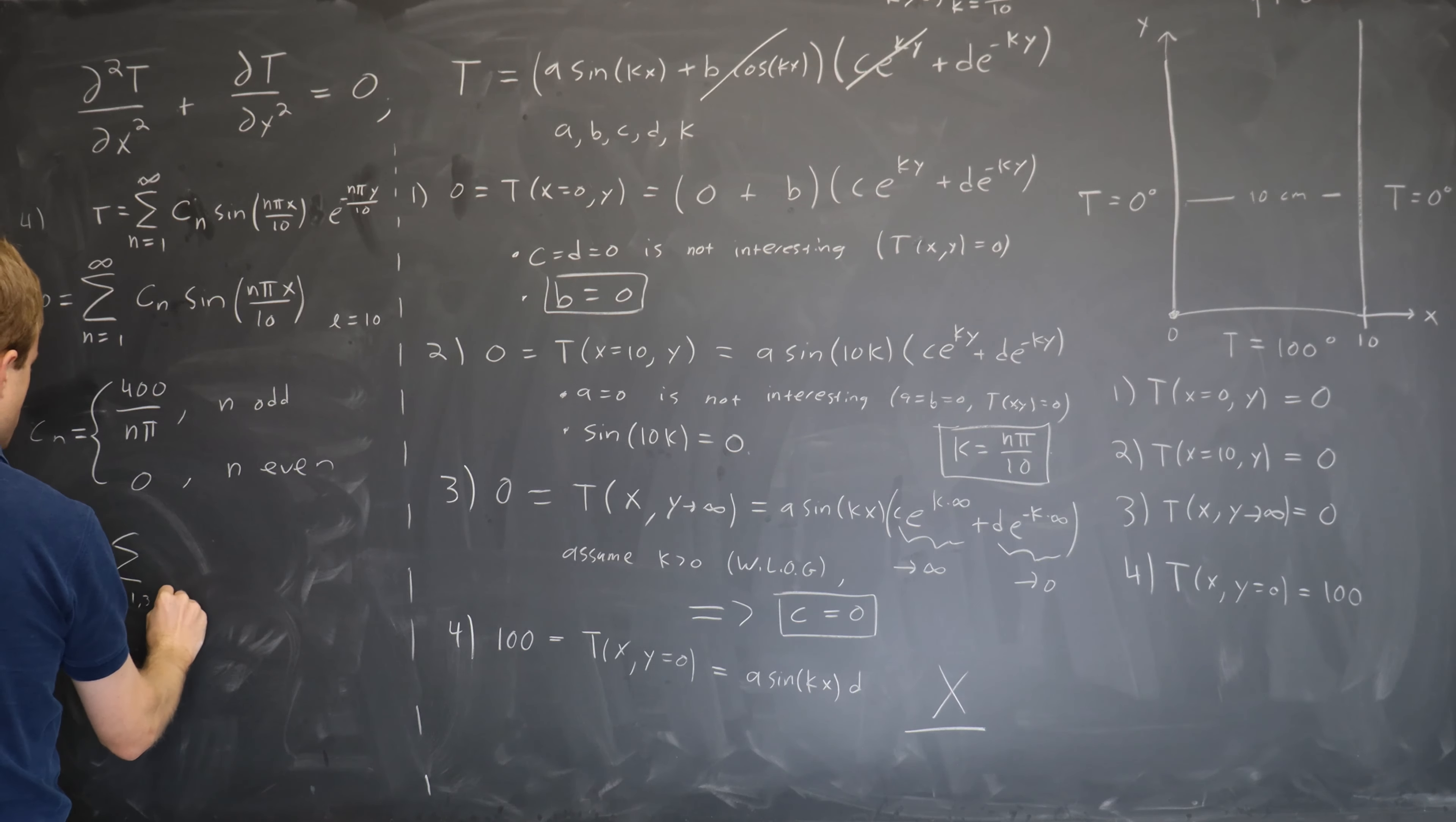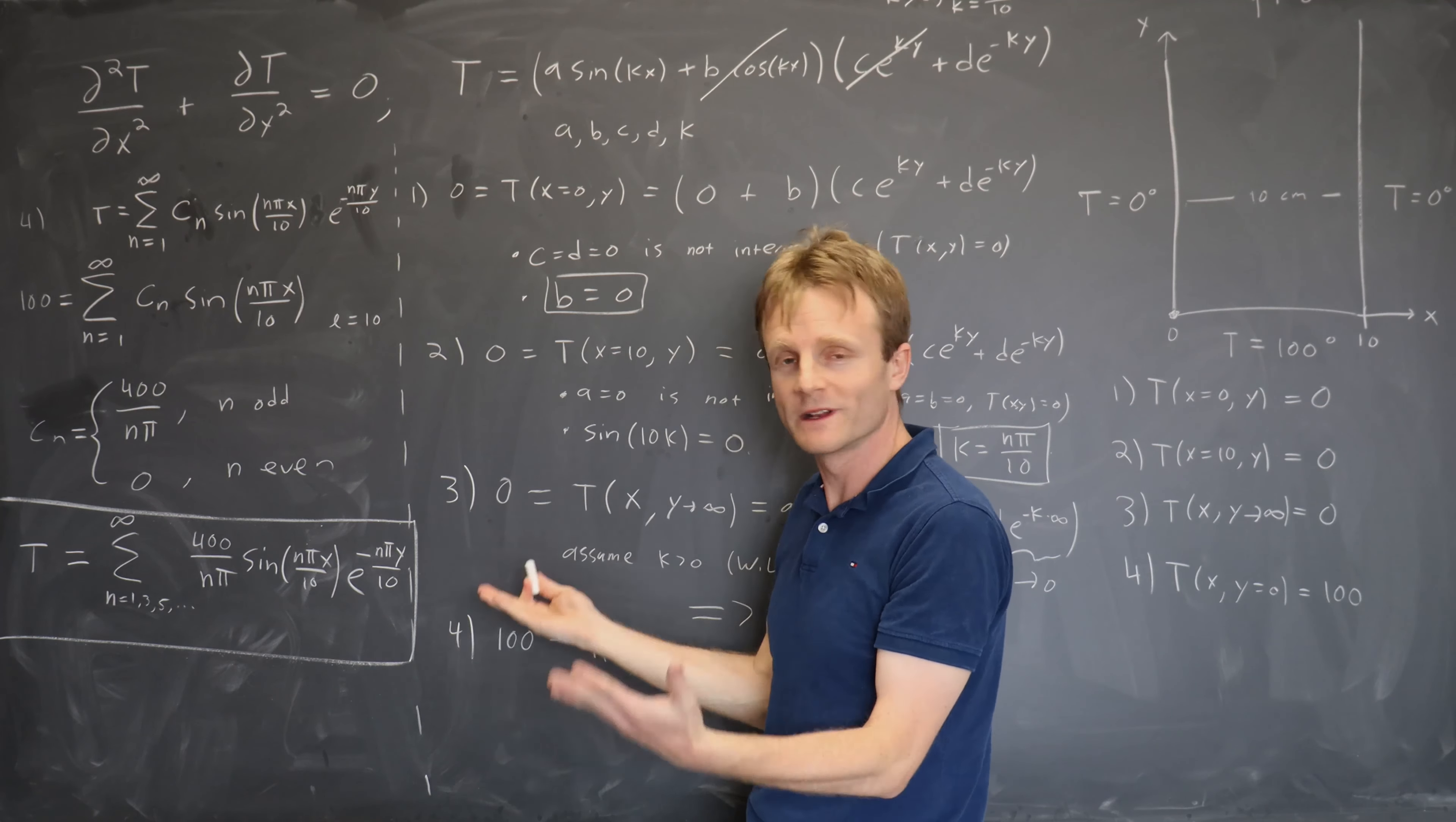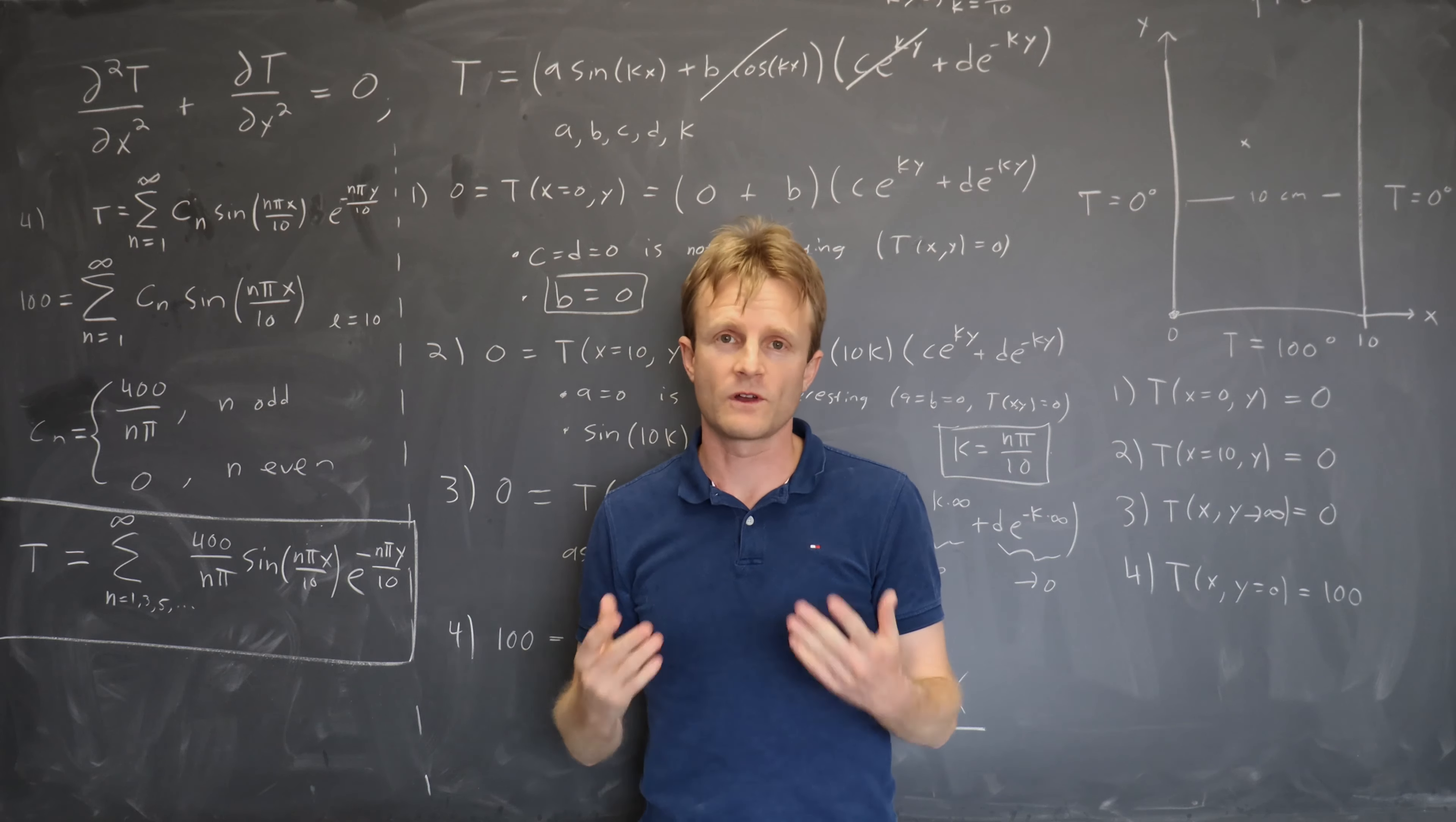And if we go back to our answer here at step four, c_n was the only thing we didn't know, so we've actually solved the problem entirely. The solution to our boundary value problem is capital T equals the sum over n equals only the odd ones, all the way to infinity of the c_n, which is 400 over nπ, sine(nπx/10), e^(-nπy/10). It's not a simple solution, it's a sum of a bunch of functions, but it's a solution. We've written it down in closed form. This Fourier series will converge. If you want to actually find out the temperature distribution at any point in your plate, you just plug in the x value of that point, plug in the y value of that point, and ask the computer to include the first 10 terms, the first 100 terms, whatever you want to get an answer as accurate as you want. And that's how you use separation of variables to solve a simple boundary value problem.